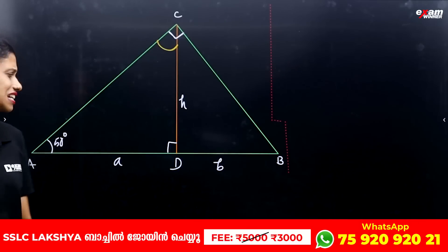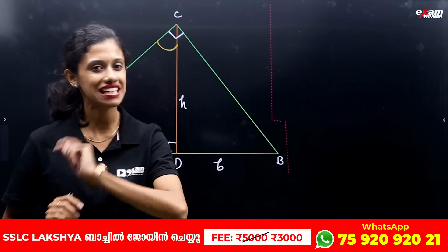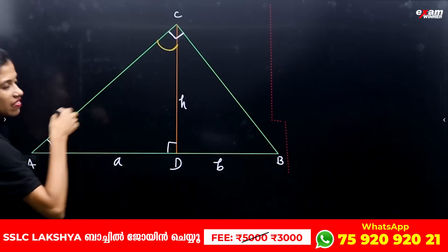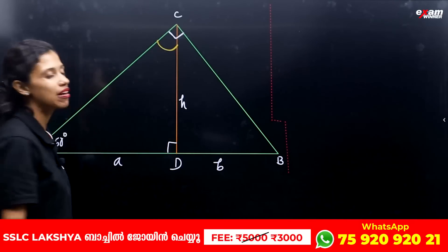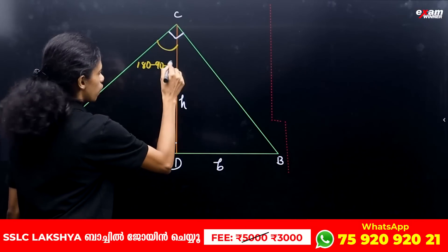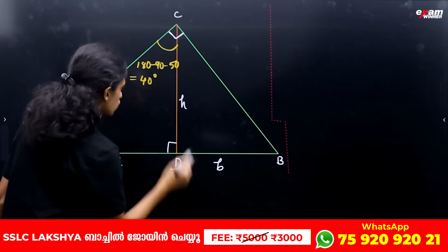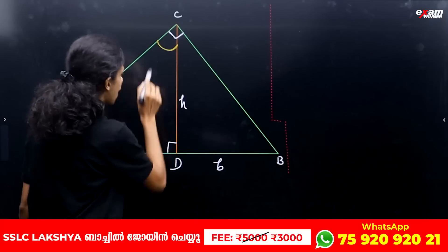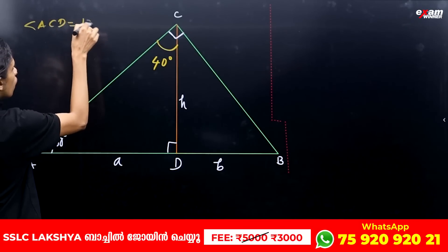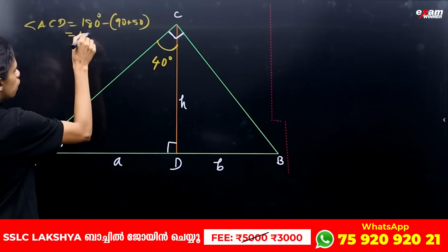We have 90 degrees and 50 degrees. In a triangle, angles add to 180 degrees. So angle A + angle ADC + angle ACD equals 180 degrees. Angle ADC is 90 degrees. So angle ACD equals 180 minus 90 minus 50, which equals 40 degrees.